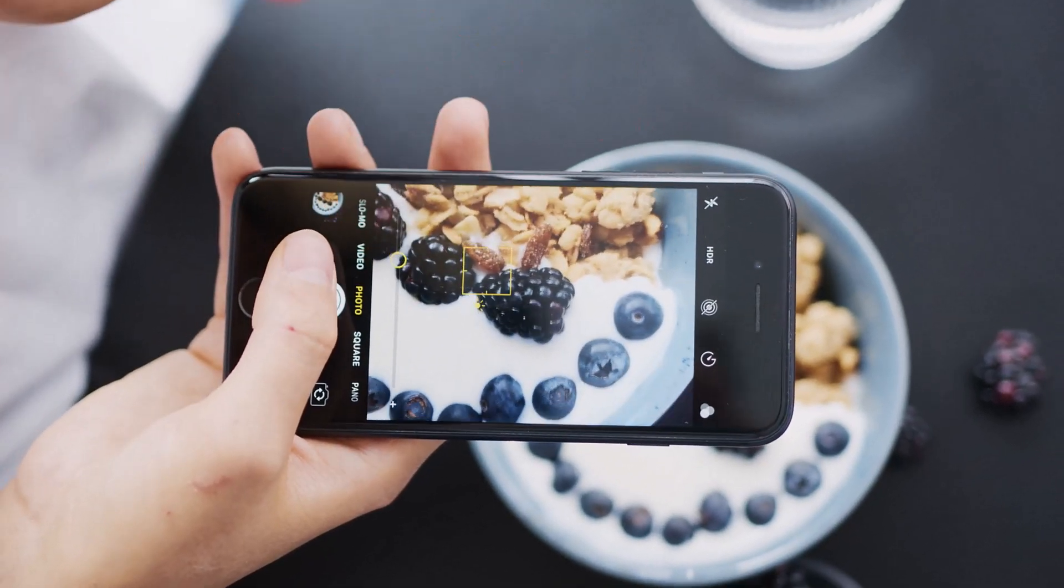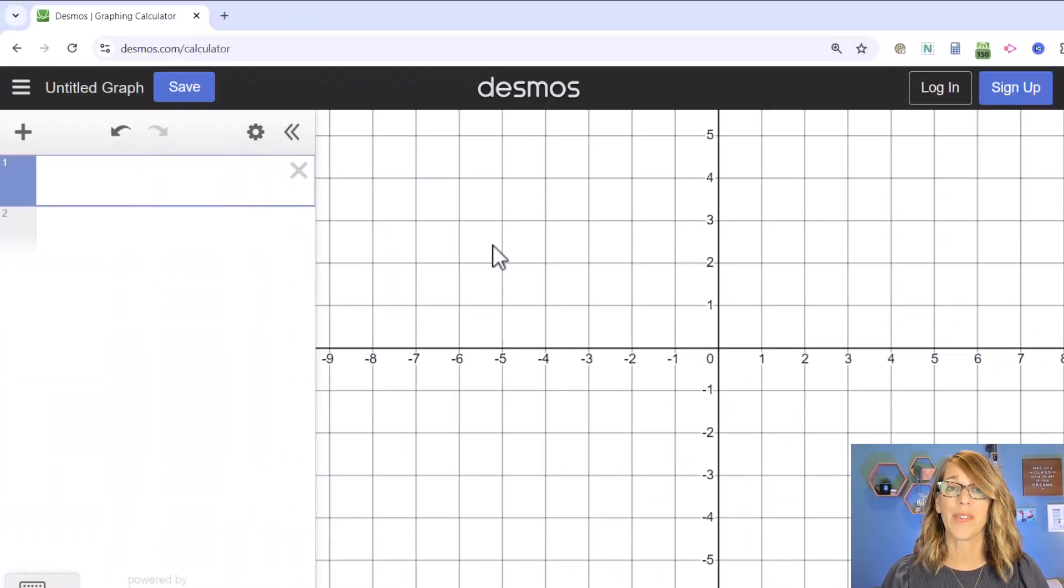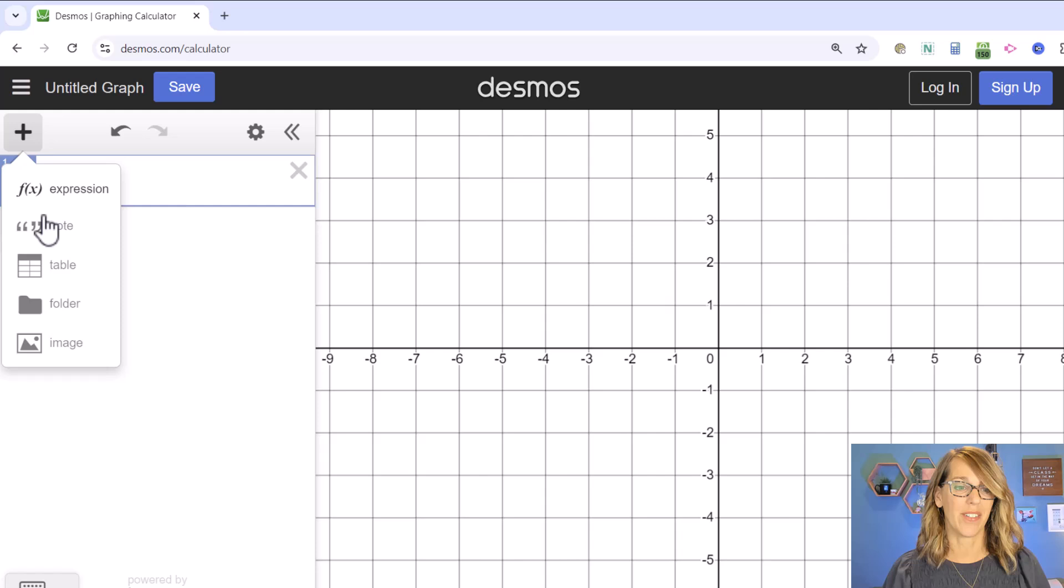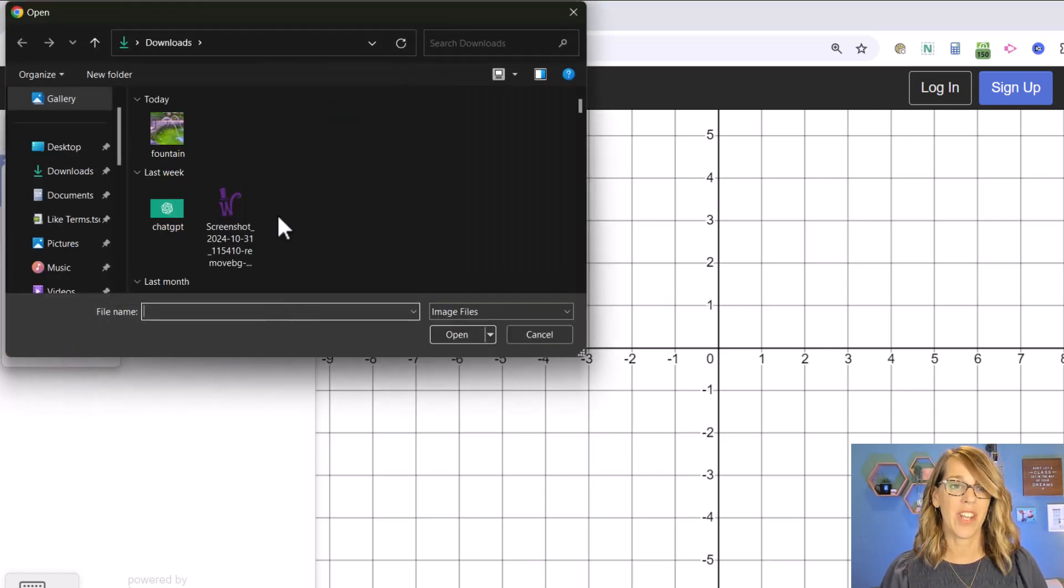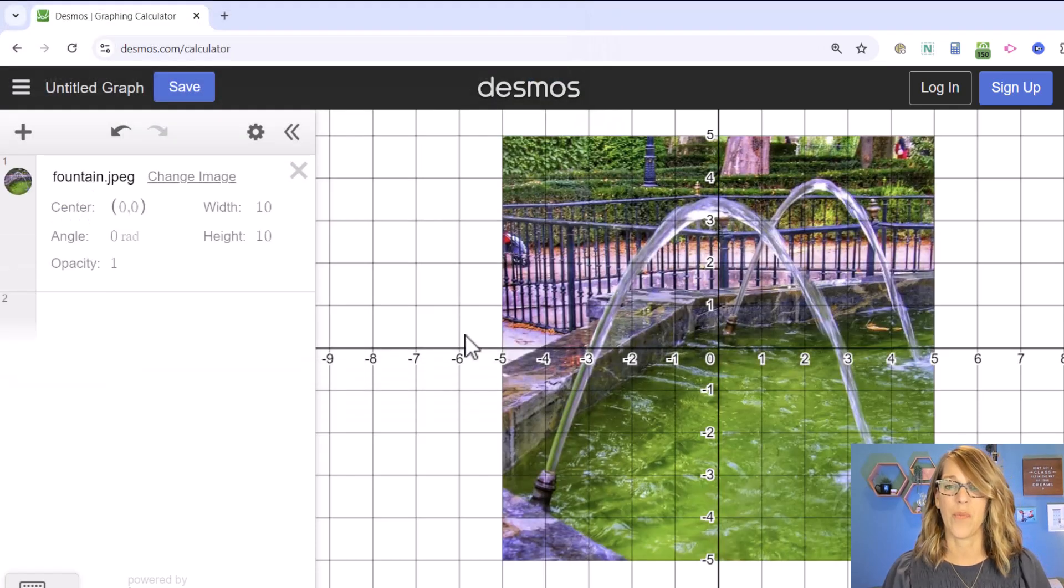Once you've got that image saved in your computer, you can go to Desmos and insert that image. So I am going to grab that plus sign add item and scroll down to add image and mine happens to be right there in my download. So I'm going to click that and then open.